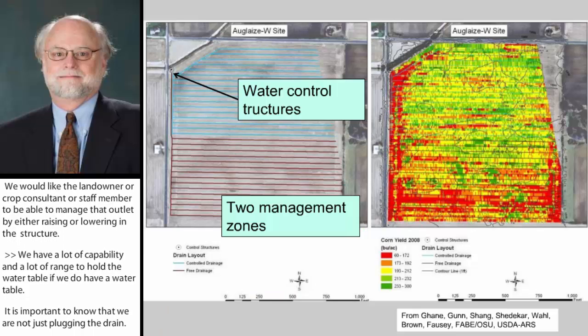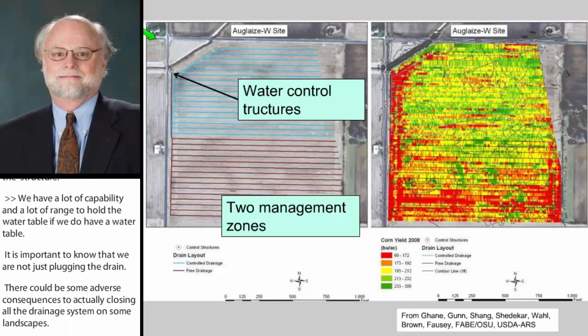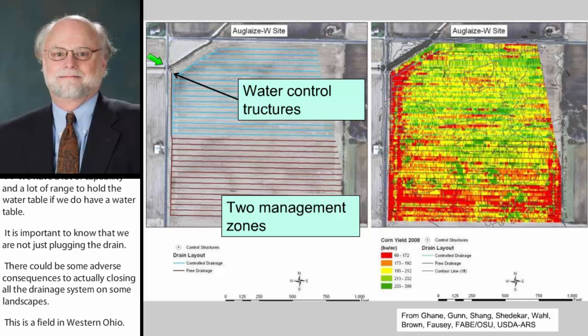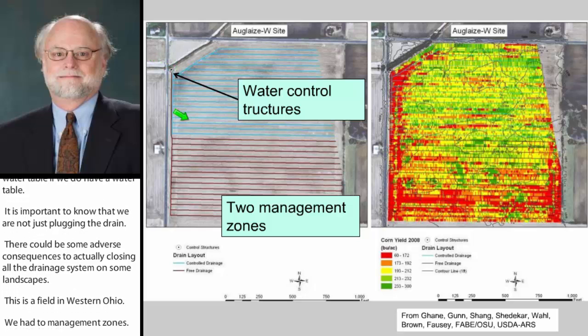This is a field in western Ohio. We have two management zones, and both of these are retrofitted with controlled drainage structures. We were doing comparisons here of yield benefits and water quality improvement benefits on this particular field, which is roughly about 50 acres or so.